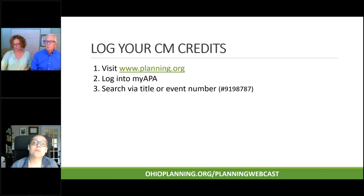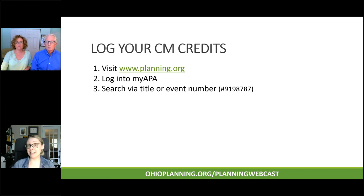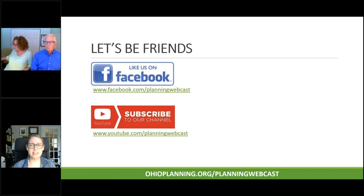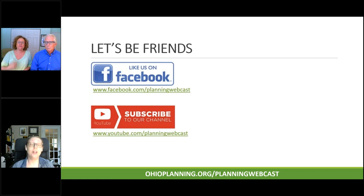Today's session has been approved for 1.5 CM credits for live viewing. To log those credits, head over to Planning.org, log into your MyAPA account, and search by today's title or the event number shown on screen. You can also find that information at OhioPlanning.org/PlanningWebcast. Be sure to like us on Facebook — search Planning Webcast — and subscribe to our YouTube channel, where we post recordings of all sessions. We have over 300 videos and over 3,000 subscribers.